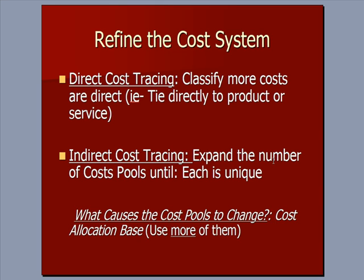We also talk about indirect costs being allocated. We want to expand the number of cost pools — that is, the measurements of things that consume our cost dollars. We want to make them more specific, and we want more of them until each one is unique.